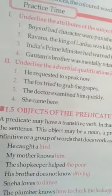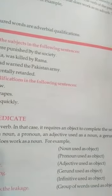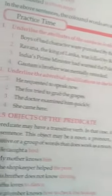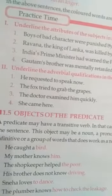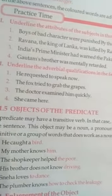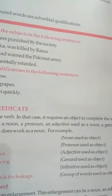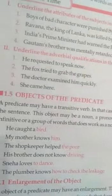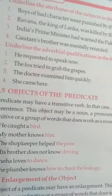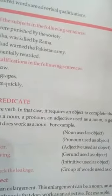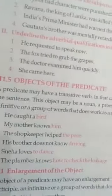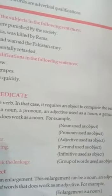For example: 'He caught a bird' — noun used as an object. Here, bird is a noun and it has been used as an object. 'My mother knows him' — pronoun used as object. 'The shopkeeper helped the poor' — adjective used as object. 'His brother does not know driving' — gerund used as object. 'Sneha loves to dance' — infinitive used as object.